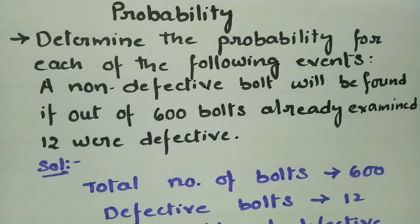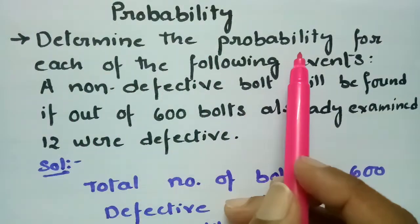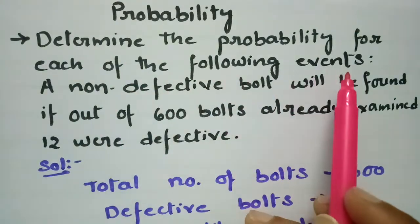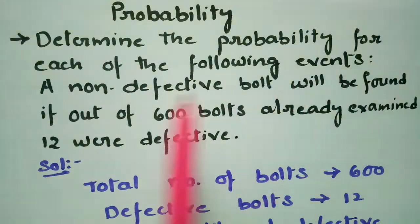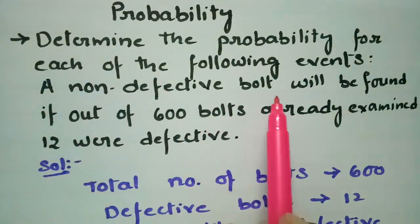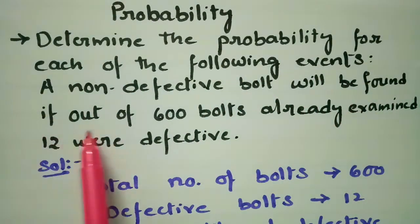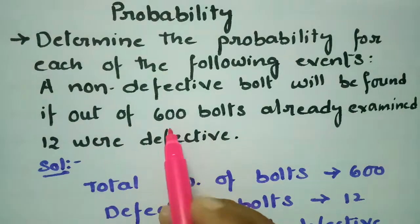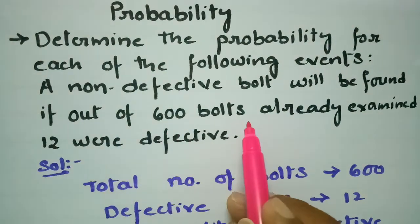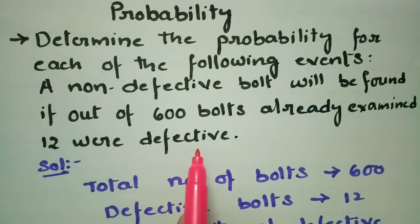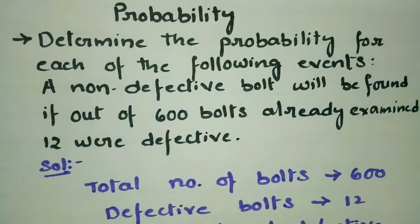This problem is on probability. In this video we have to determine the probability for each of the following events: a non-defective bolt will be found if out of 600 bolts already examined, 12 were defective.